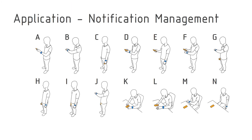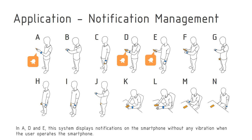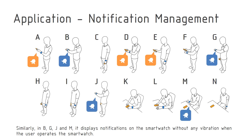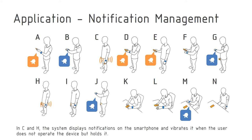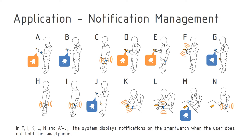Notification Management System: In contexts A, D, and E, this system displays notifications on the smartphone without any vibration when the user operates the smartphone. Similarly, in contexts B, G, J, and M, it displays notifications on the smartwatch without any vibration when the user operates the smartwatch. In contexts C and H, the system displays notifications on the smartphone and vibrates it when the user does not operate the device but holds it. In contexts F, I, K, L, N, and A- through J-, the system displays notifications on the smartwatch when the user does not hold the smartphone.